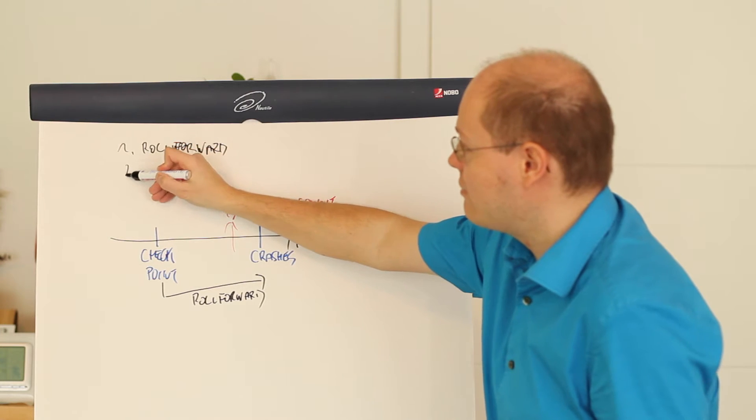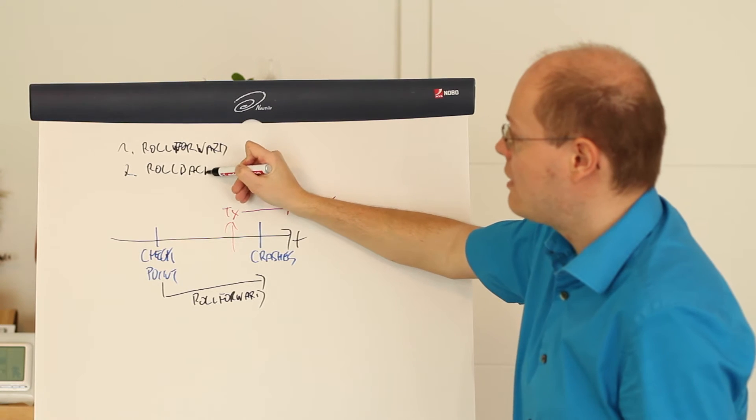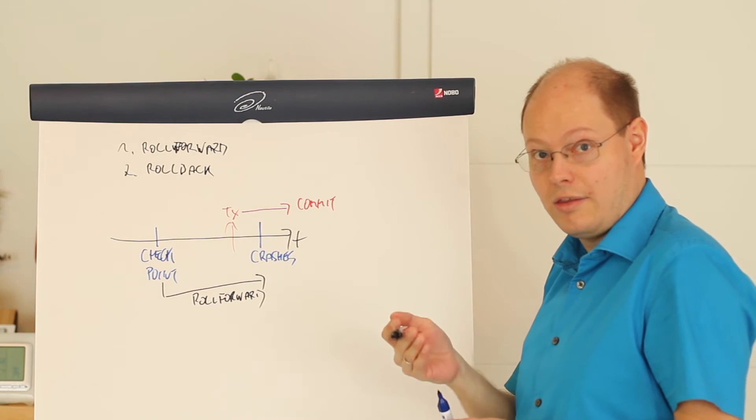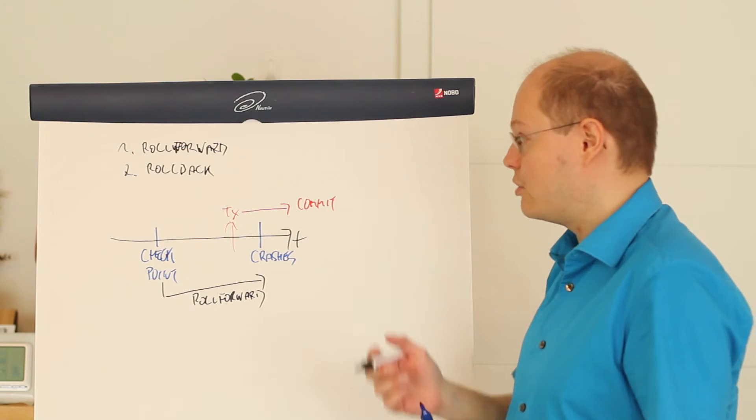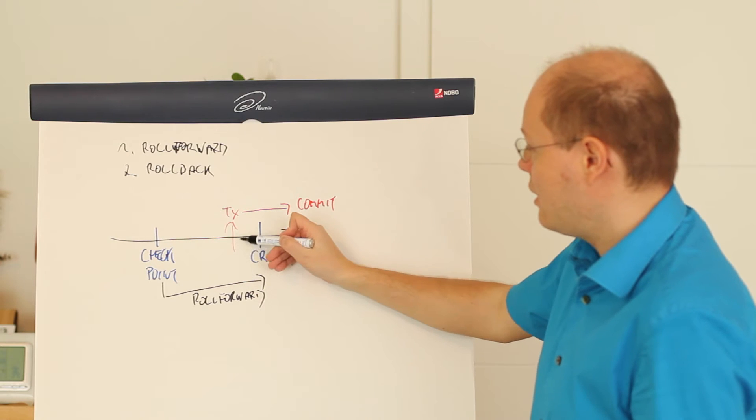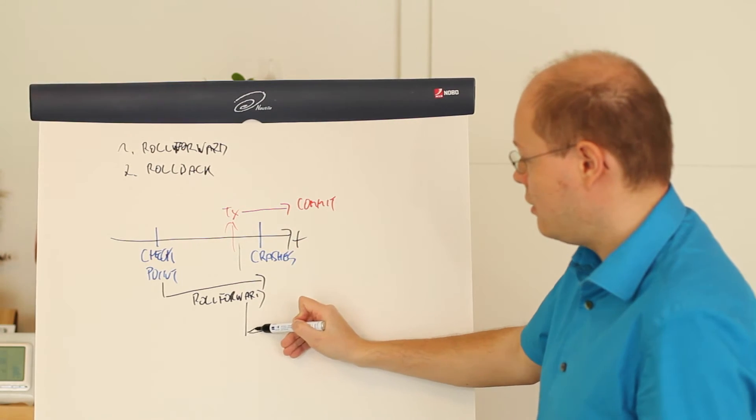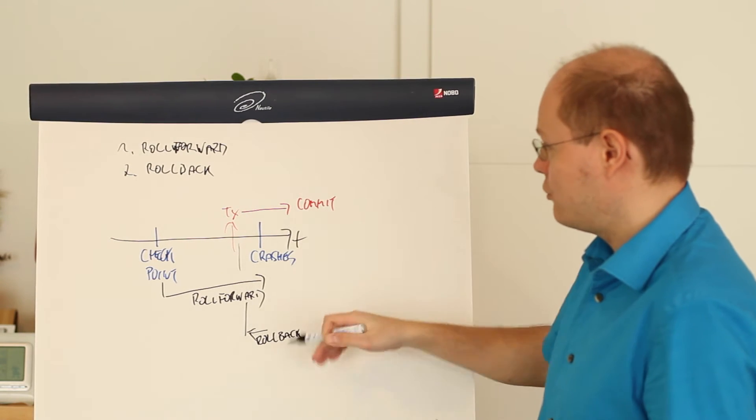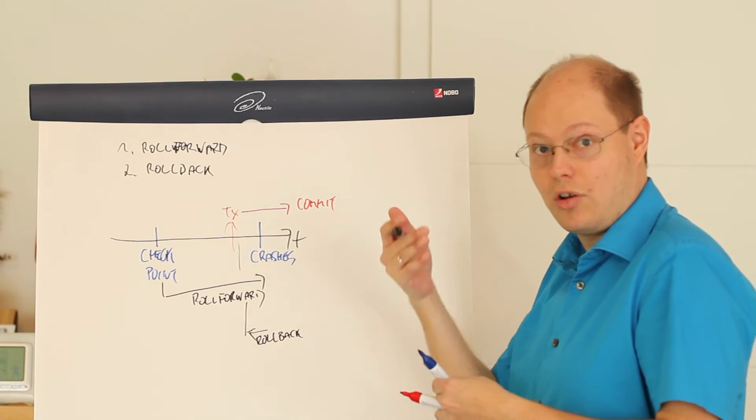And afterwards, the second phase is the so-called roll back phase, and during the roll back phase SQL Server just undoes all those transactions that have started but not yet committed. So in our case, that transaction here is rolled back because that transaction hasn't yet committed because of the crash of SQL Server.